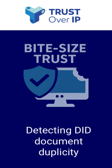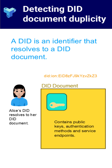A decentralized identifier, or DID, is a unique string that resolves to a DID document. This document holds important information, including the public keys associated with that identity. But like many digital technologies, DIDs come with certain risks, and different DID methods have emerged to help manage them.